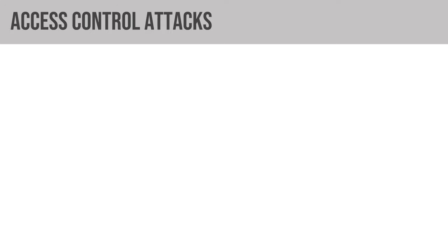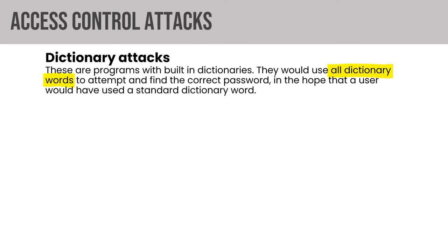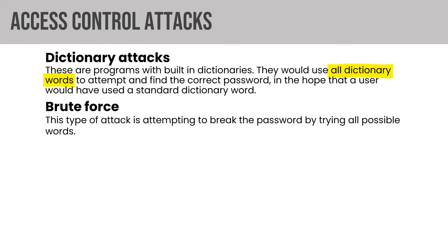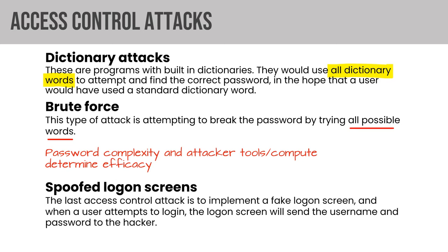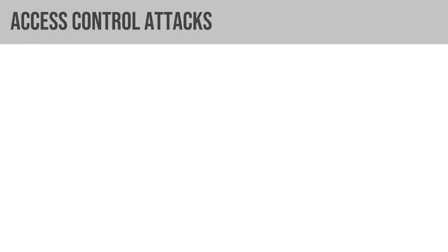Common access control attacks include: dictionary attacks, which try all dictionary words to find the correct password — password policies help here; brute force attacks, which try all possible passwords — complexity and compute power determine efficacy; and spoofed logon screens, which implement a fake logon screen that sends the username and password to the attacker. Spoofed screens can appear on compromised systems or through phishing attacks, such as a fake Gmail login page encouraging you to change your password.